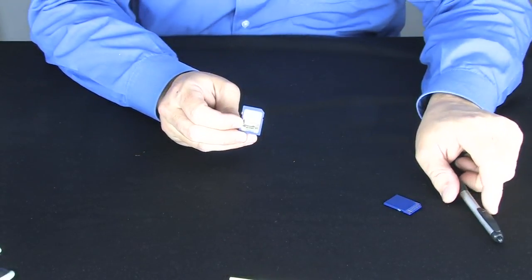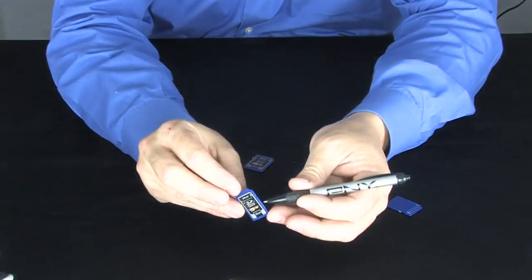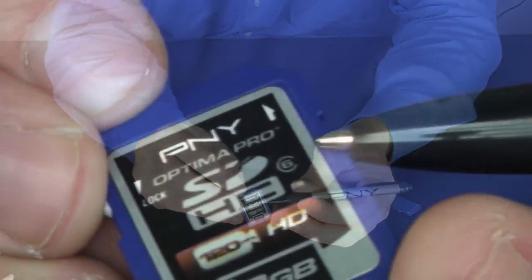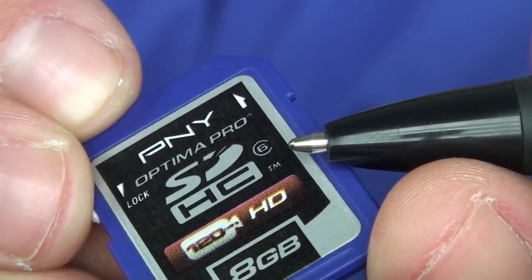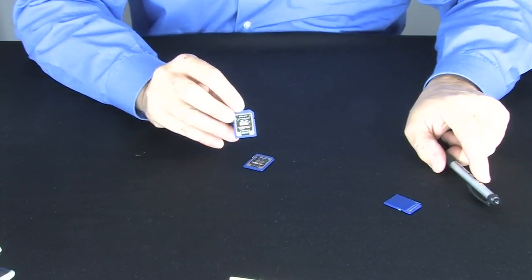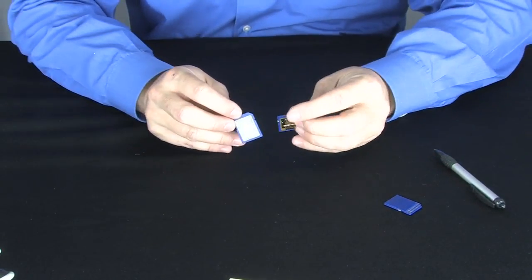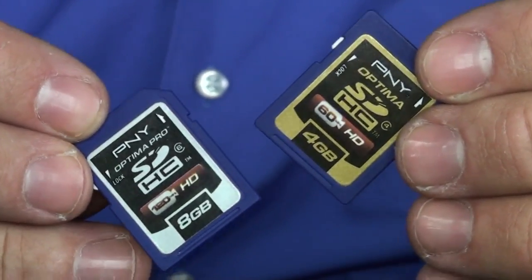That 4 means that it's a Class 4 device and it writes at about four megabytes a second. A Class 6 device, which would be on a card like this, says 6 right here instead of 4. If you look real carefully you can see that 6. That means that this card will allow you to write at six megabytes a second. Well, why the difference between the four megabytes a second and the six megabytes a second?